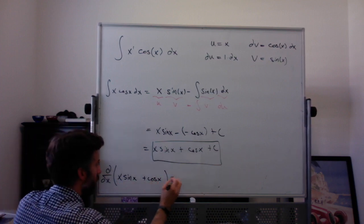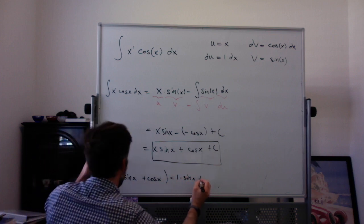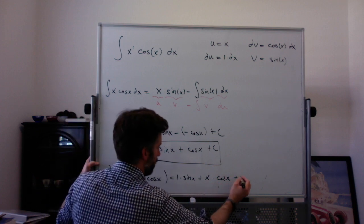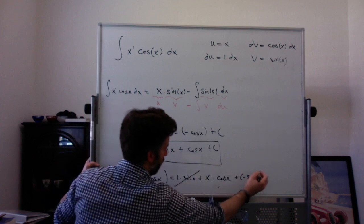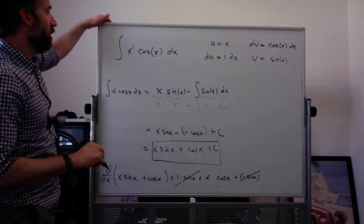Here I'm using the product rule. 1 times sine of x plus x times the derivative of sine is cosine of x, and then plus the derivative of cosine is negative sine. And look, the sine here and the negative sine here cancel out and you get x cosine x, which is exactly what we were going to differentiate.